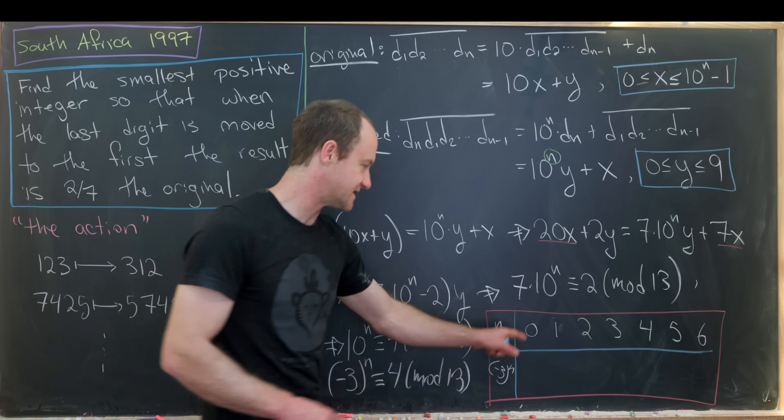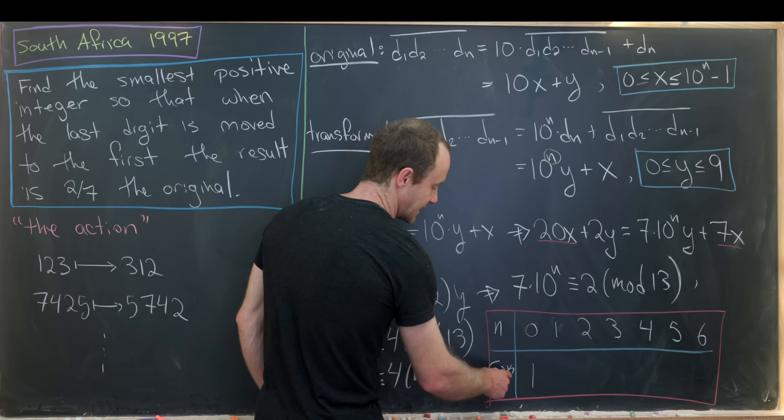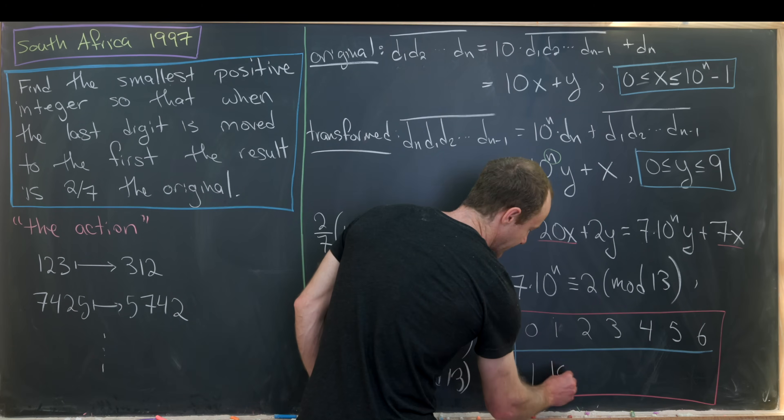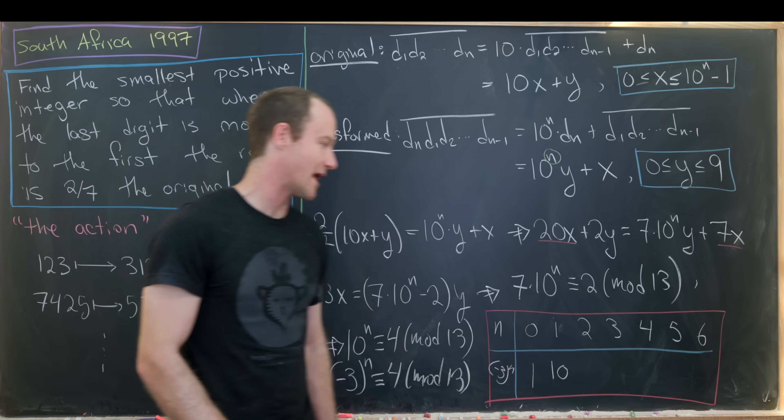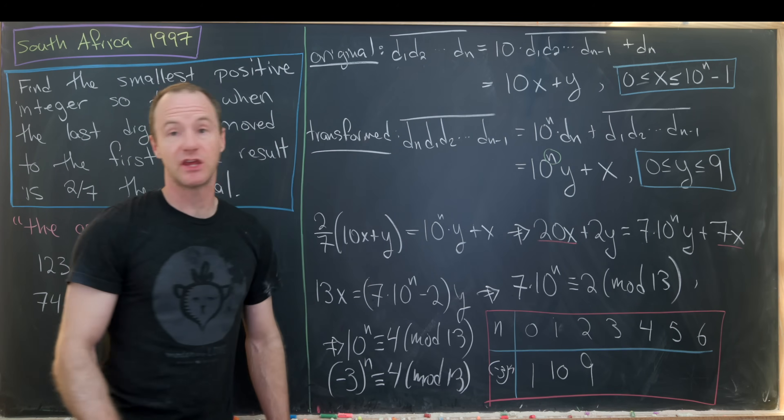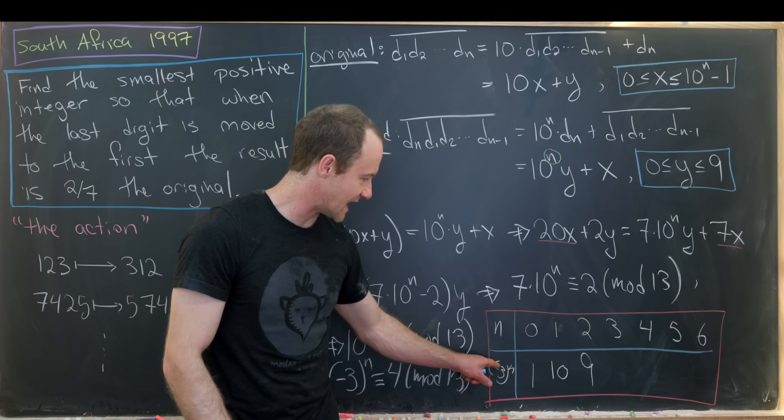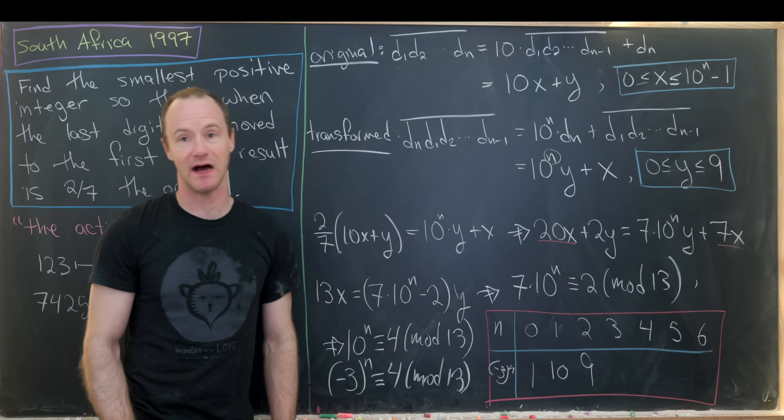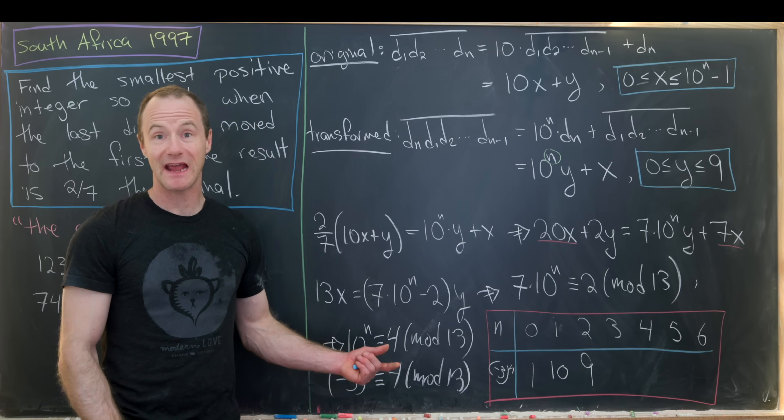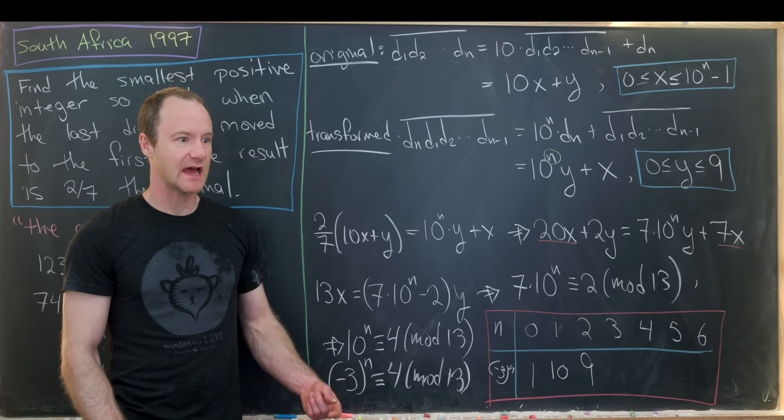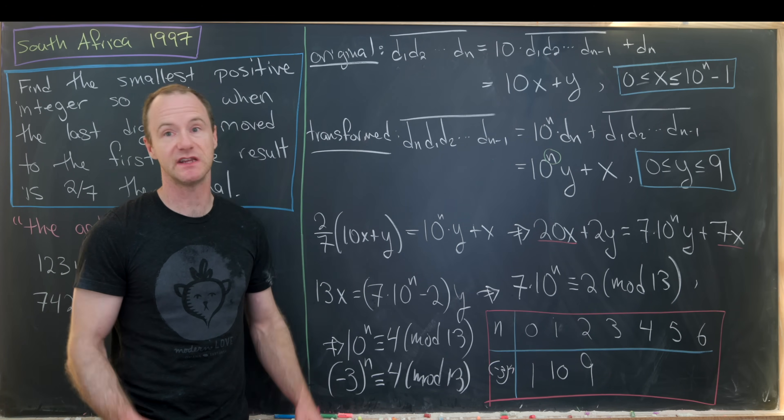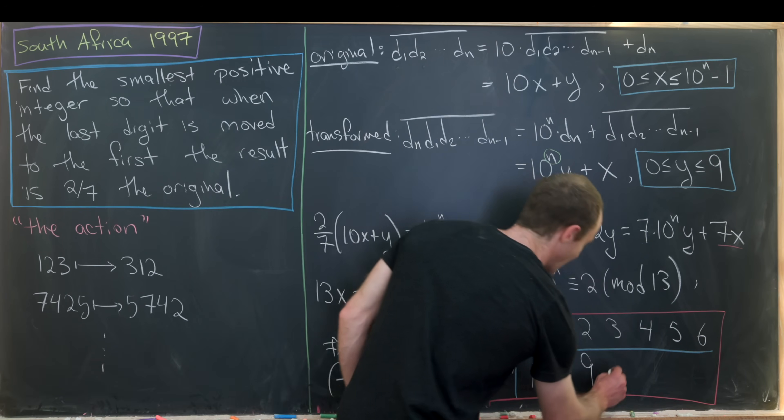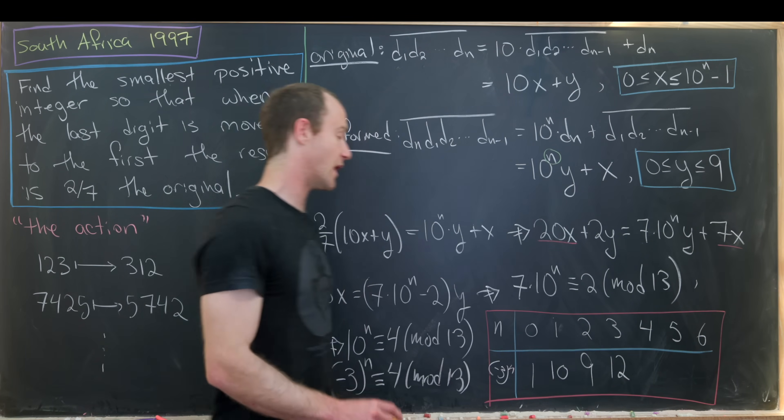Negative 3 to the 0 is 1. Negative 3 to the 1 is negative 3. But I'll rewrite that as 10 just because it's nicer. Negative 3 squared is 9. Negative 3 cubed, well, that'll be the same thing as negative 3 times 9. But that's going to be negative 27. But negative 27 is the same thing as negative 1 because it's 1 less than 26, which is a multiple of 13. But negative 1 is the same thing as 12. So we get 12 there.